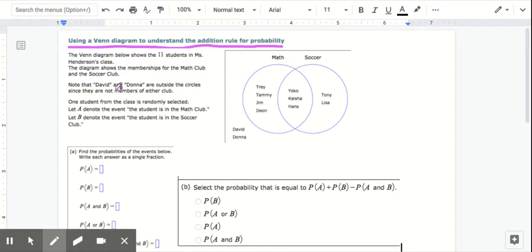Note that David and Don are outside the circle since they are not members of either club. So one student from the class is randomly selected. Let A denote the student is in the math club, so that means that they're in this circle. Let B denote that the event that the student is in the soccer club, so that'll be B in this circle.